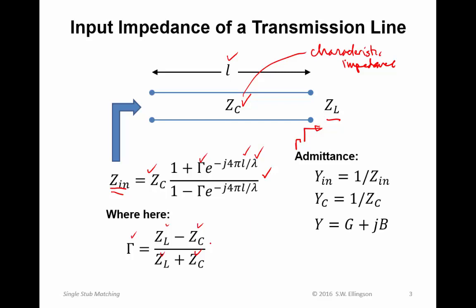Then also to remind you about admittance. Admittance is the reciprocal of impedance. It is more useful in some cases than impedance, including the single stub matching technique. So it's very simple to go back and forth. Admittance is simply the reciprocal of impedance. The characteristic admittance is the reciprocal of the characteristic impedance. We often write the admittance in terms of a real part G and an imaginary part B, just as we write impedance sometimes as R plus jX.